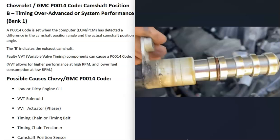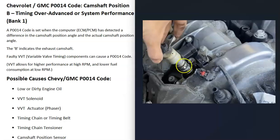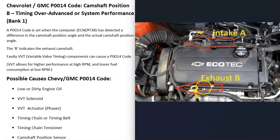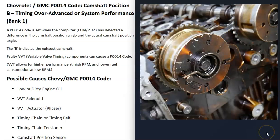The next possible cause is a bad variable valve timing solenoid. These slide in and out, have a wiring harness connected to them, and are usually held in by one bolt. If one goes bad, it causes issues — and since this is on the exhaust side, check the exhaust VVT solenoid. Also keep in mind that any wiring issue going to the solenoid, like an open or short, will cause the same problems.